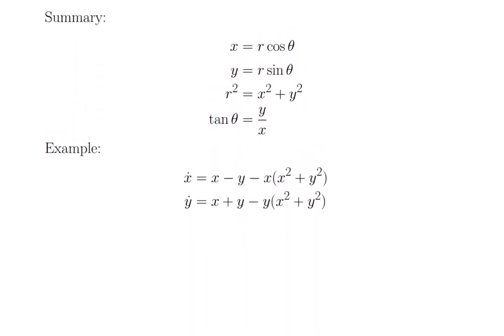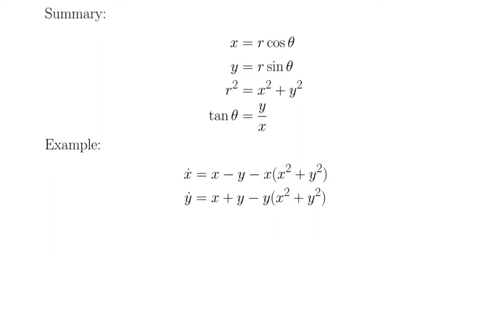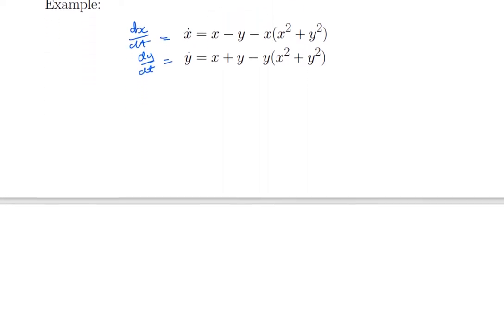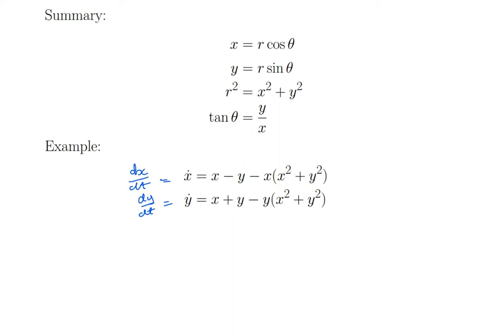Here is the example. There's my formulas for polar coordinates. And here's my example. Dot here, x dot. That's just a shorthand for derivative with respect to time. x dot means dx/dt. Do I have a blank page coming up? Yes, I do. So here we go.